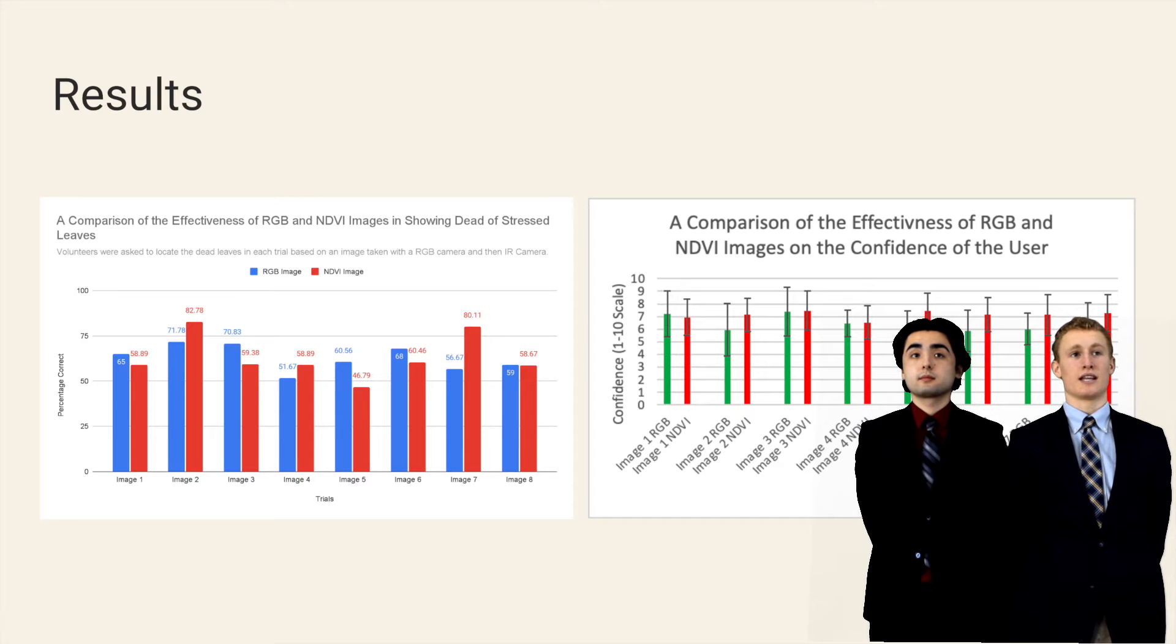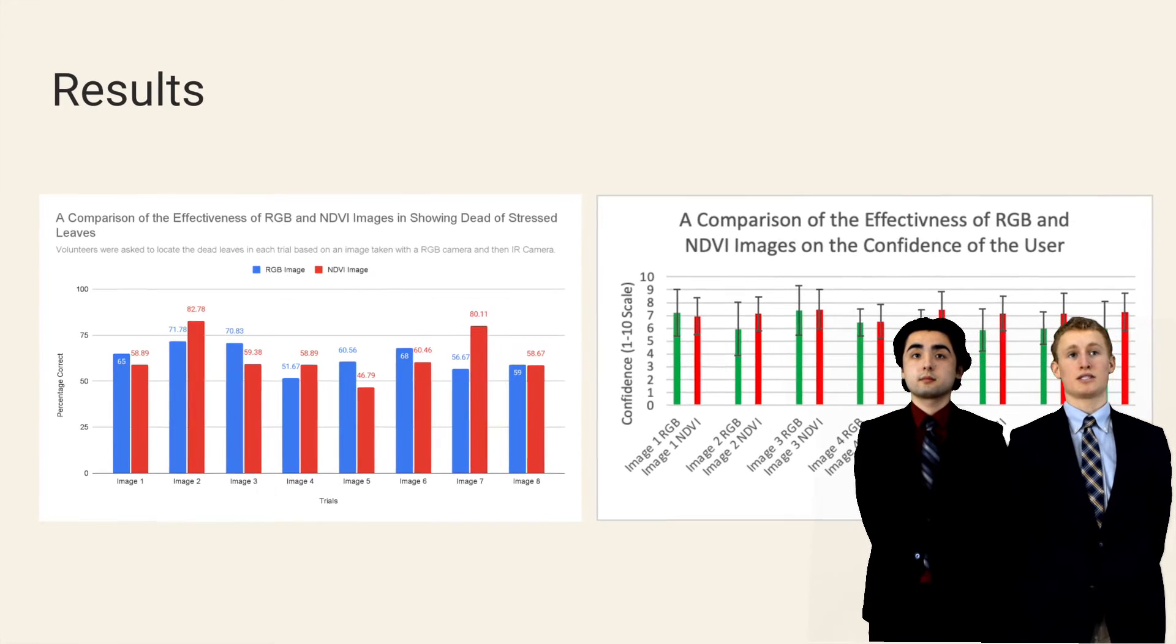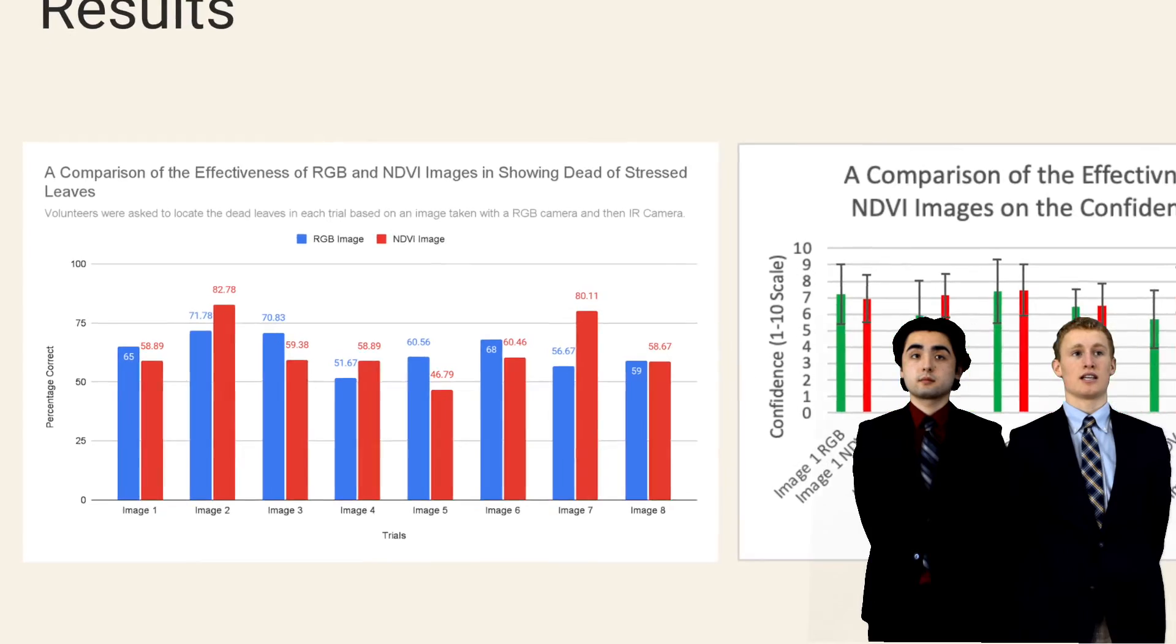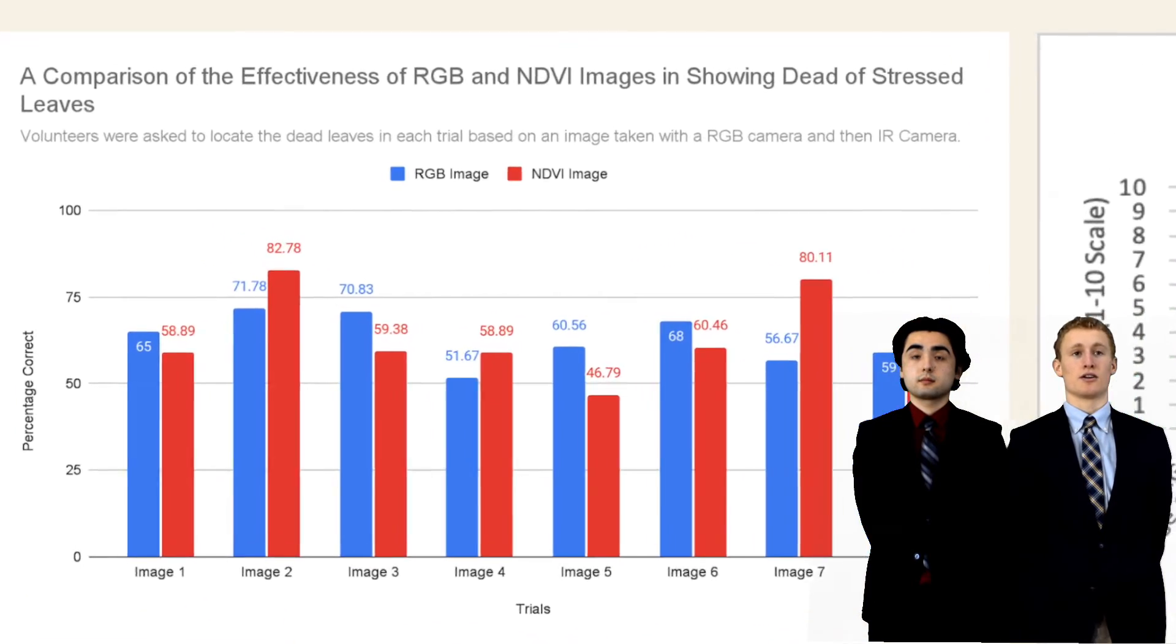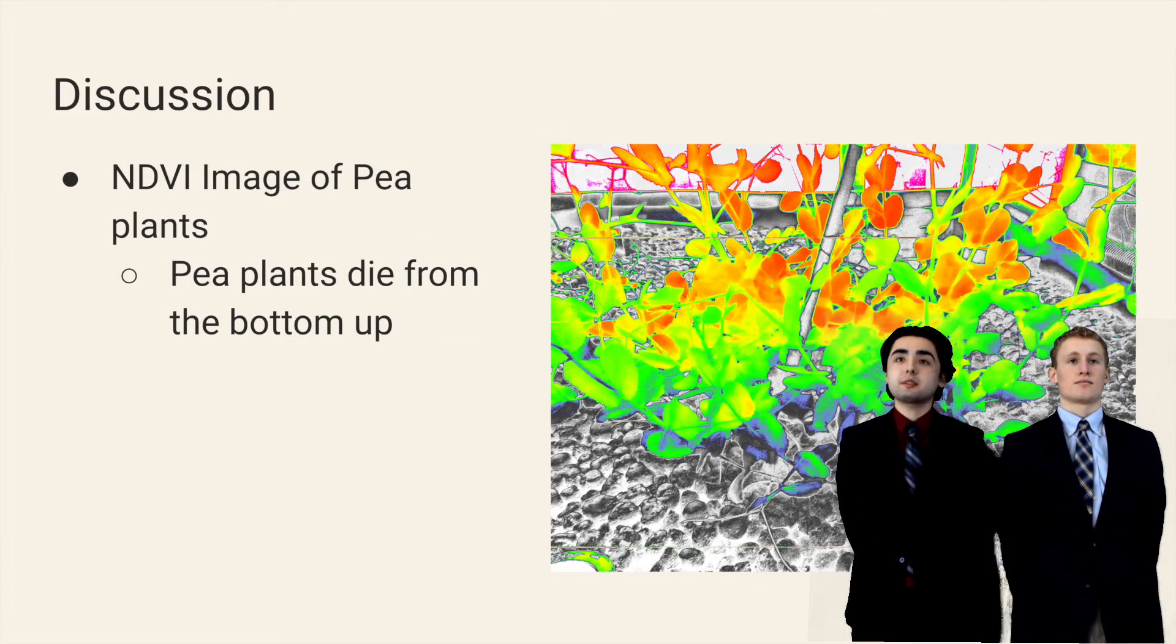These graphs compare the accuracy of the volunteers when looking at the RGB and NDVI images. Image 2 and 7 NDVI should be noted as the NDVI improved the accuracy by a large margin. The results show that the NDVI image is equally as effective as the RGB image in showing plant health.